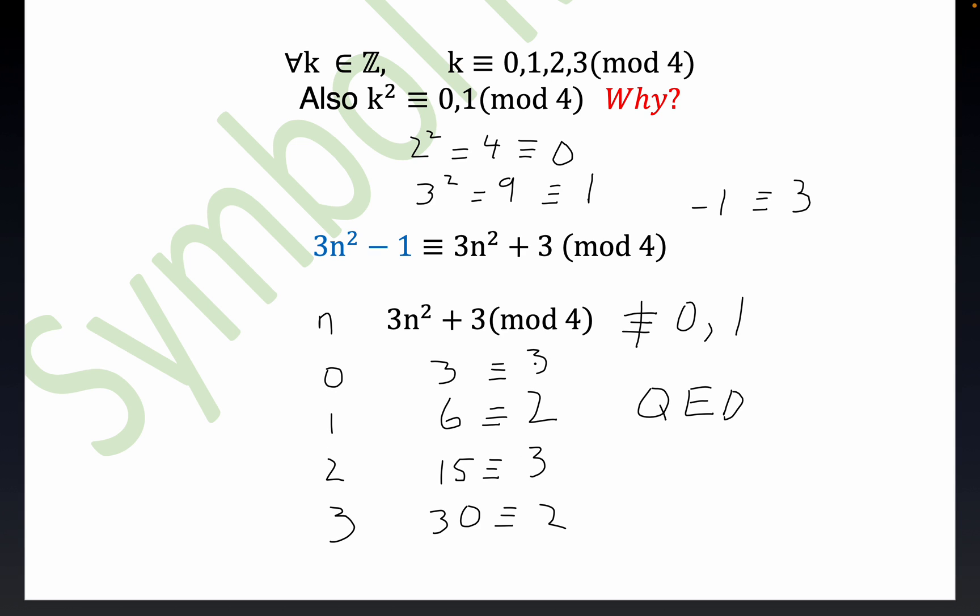that means this expression is congruent to three or two for all n. That means that it's not congruent to 0 or 1, and that means we've proved what we set out to prove. It can never equal k squared.